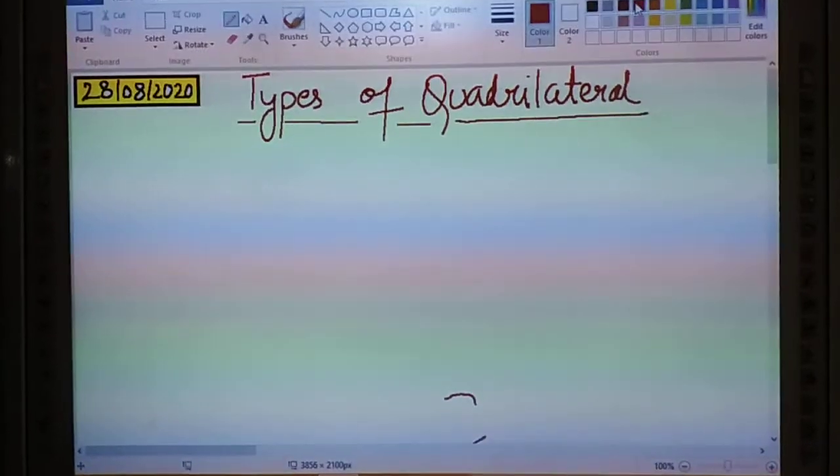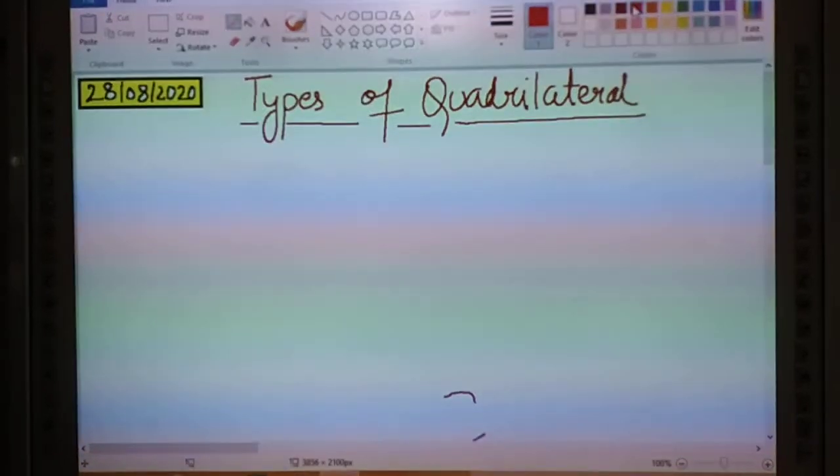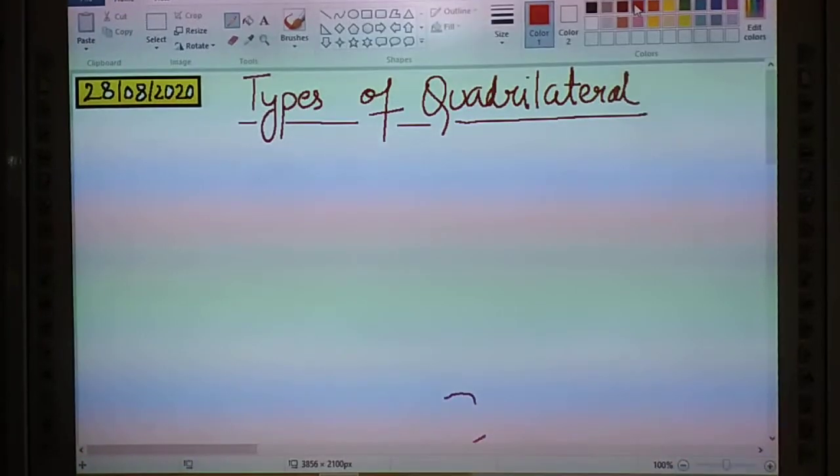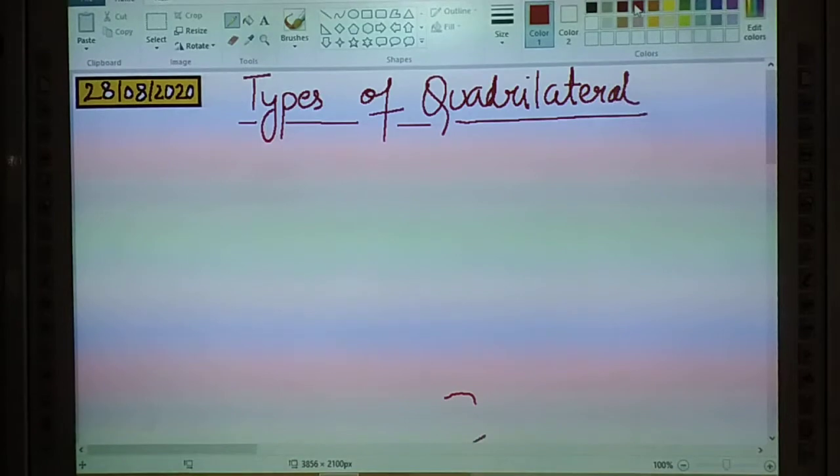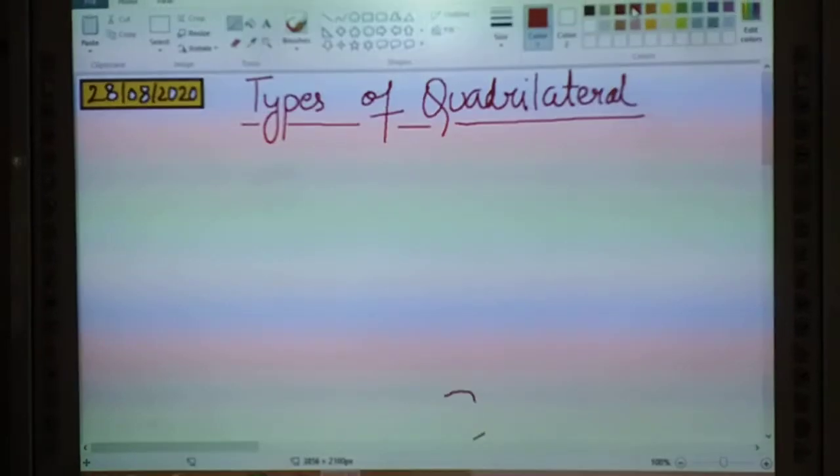This we have already studied in our previous chapter. In this topic types of quadrilaterals we will study how many types of quadrilaterals we have. We will study parallelogram, rectangle, square, rhombus and trapezium.